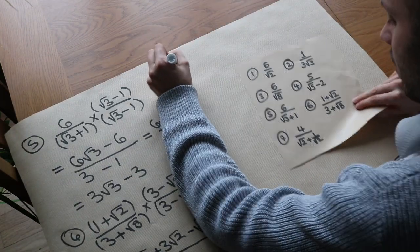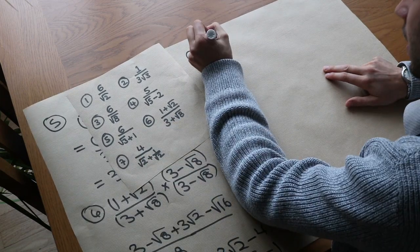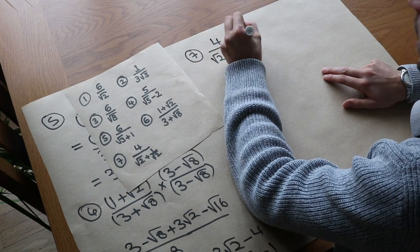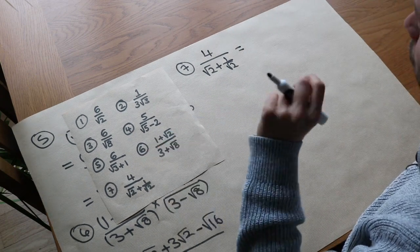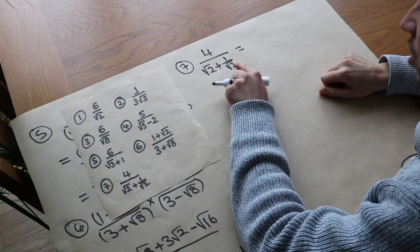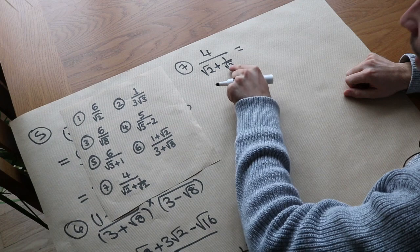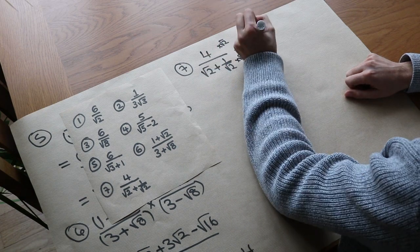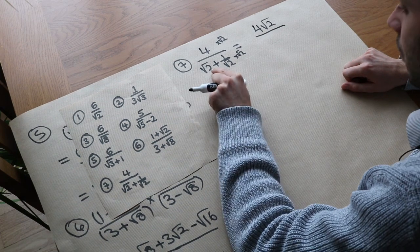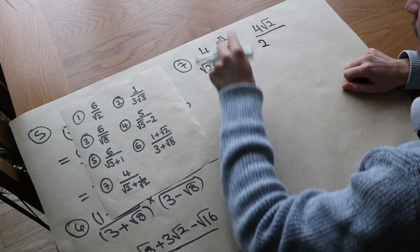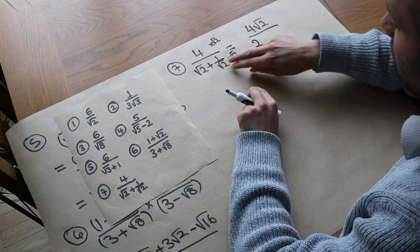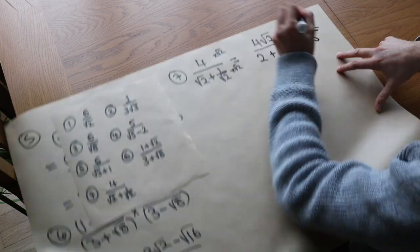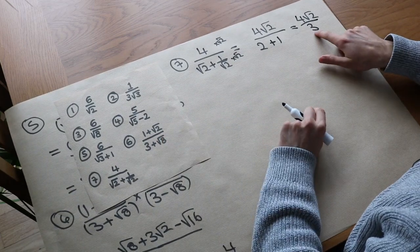Question 7 — something seen in a mock paper but rarely in real papers: 4 over root 2 plus 1 over root 2. We have a fraction within a fraction, so multiply the top and bottom of the outer fraction by the denominator of the inner fraction, which is root 2. The numerator becomes 4 times root 2 which is 4 root 2. The bottom becomes root 2 times root 2 which is 2, and 1 over root 2 times root 2 cancels to give just 1. So the denominator becomes 3, giving 4 root 2 over 3, with no surd in the denominator.